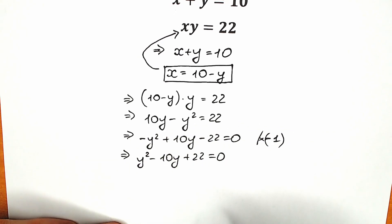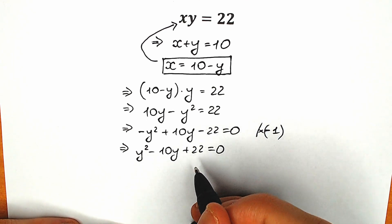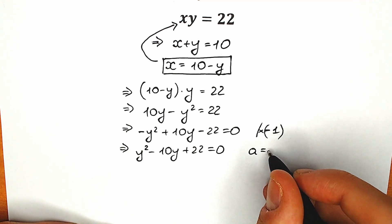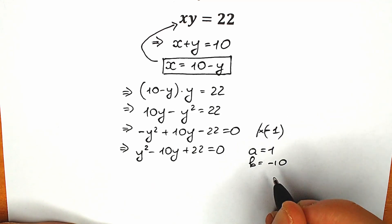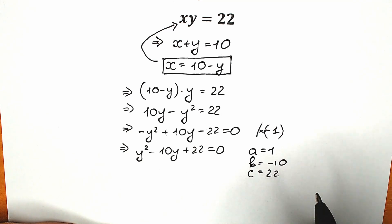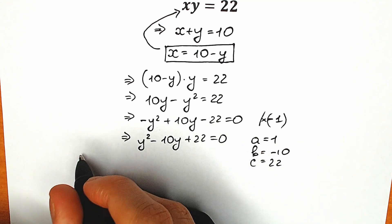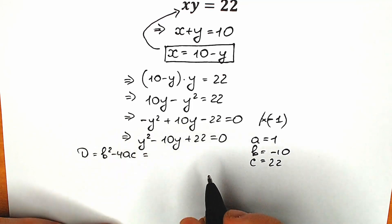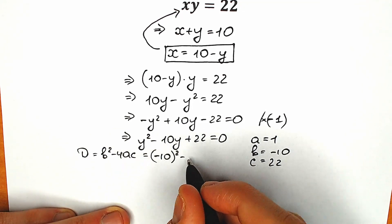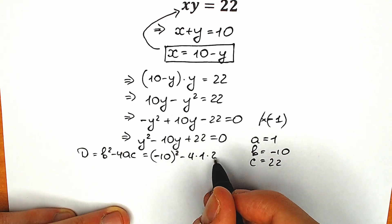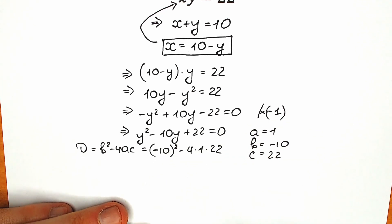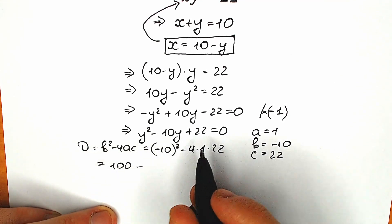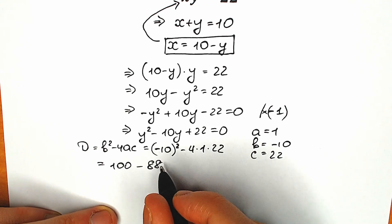This is our quadratic equation, and right now let's solve it. This is a basic quadratic equation from school. We can easily write our coefficients: a equal to 1, b equal to minus 10, and c equal to 22. So right now let's find our discriminant: b squared minus 4ac. We have minus 10 squared minus 4 times 1 times 22. Minus 10 squared equals 100, minus 4 times 22 equals 88. So as a result, right here we have 12.